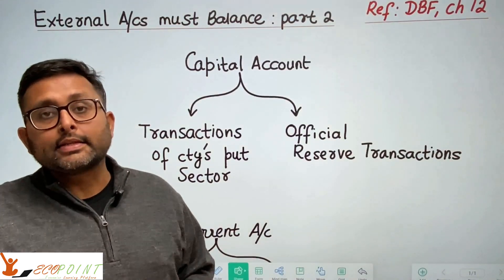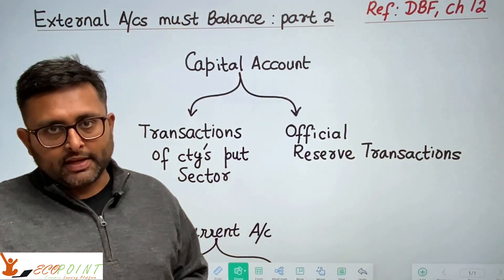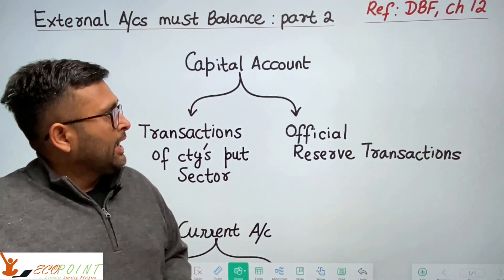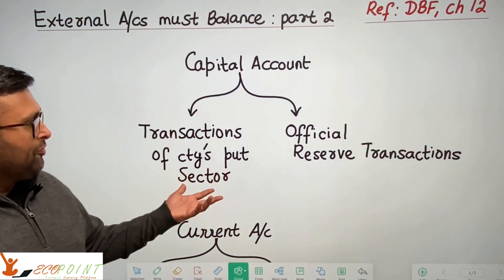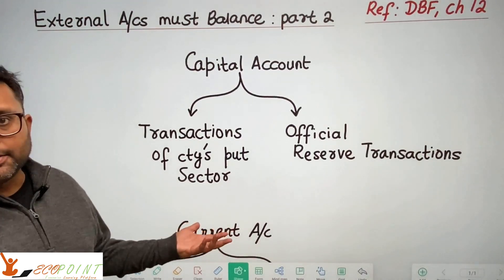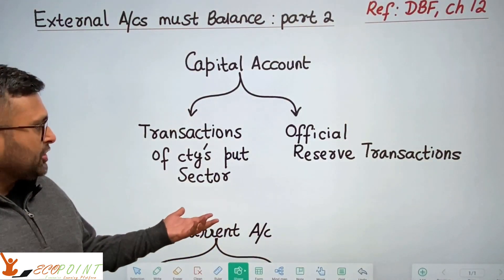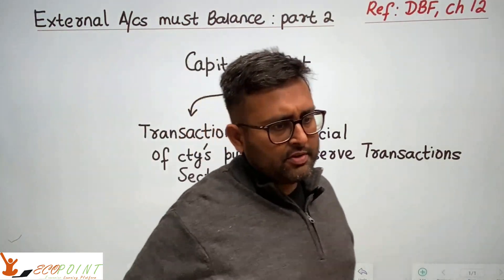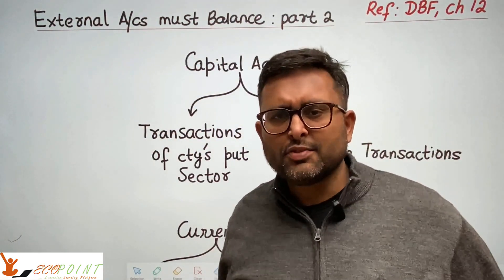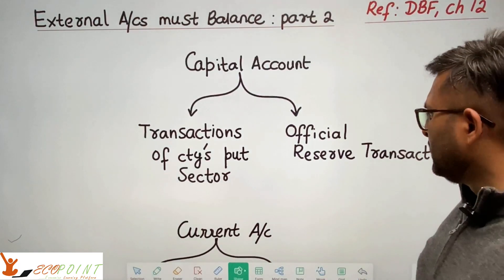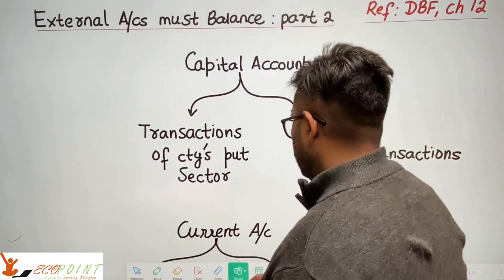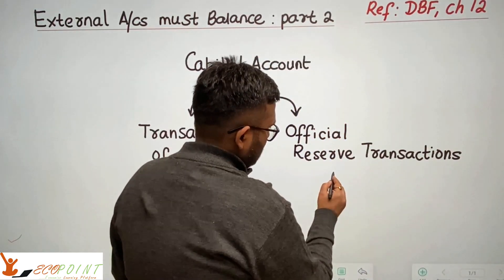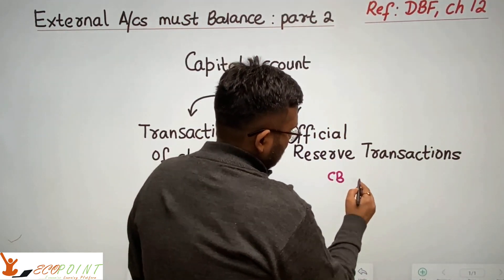This is the end of the recording on external accounts misbalance. The reference is Dornbusch and Fischer, chapter 12. The capital account of BOP can be split into two parts: one is the transactions of the country's private sector, and the other is the official reserves transactions. Every government has reserves of foreign exchange and gold, and this is basically related to central bank activities.